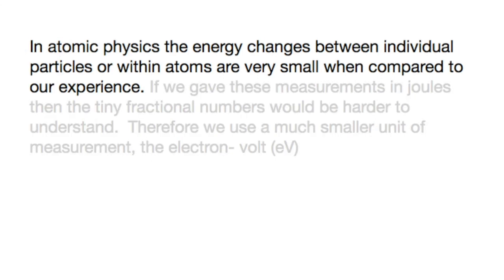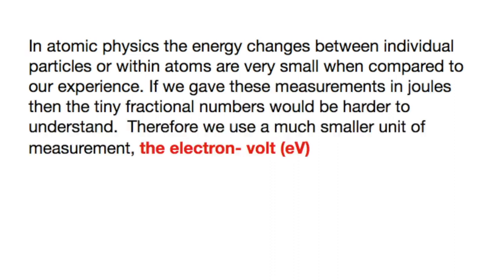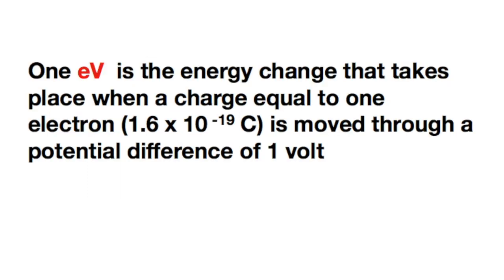For some applications, the joule is a rather large amount of energy. In atomic physics, the energy changes between individual particles or within atoms are very small compared to our macro experience. If we provided measurements of these in joules, then those tiny numbers would be much harder to understand. We therefore use a different unit, the unit which is called electron volts.